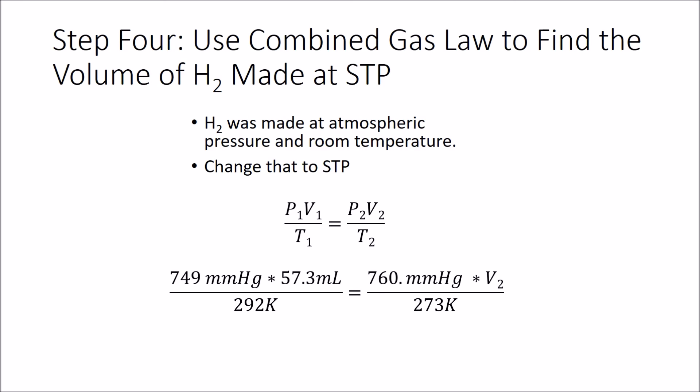Plugging in the numbers where our 1s are the atmospheric conditions we did this in and our 2s are the standard temperature and pressure conditions. So 749 times 57.3 over 292 is equal to 760 times the volume that we want to get over 273. Doing a little algebra and solving for volume 2, we get 52.7 milliliters of gas actual. That is when we correct our volume for what it would be at STP.